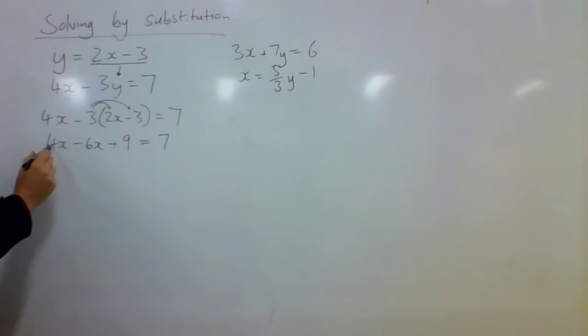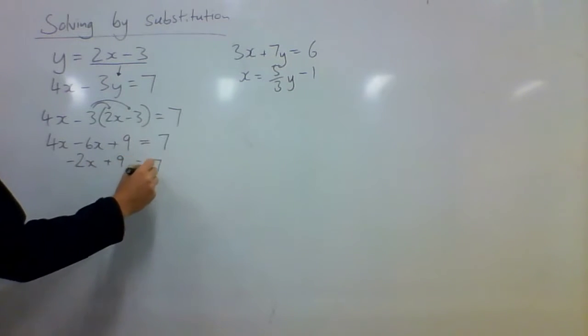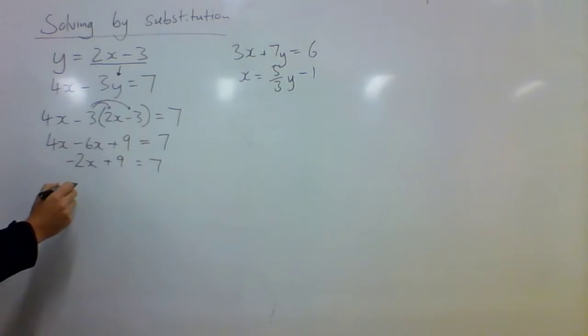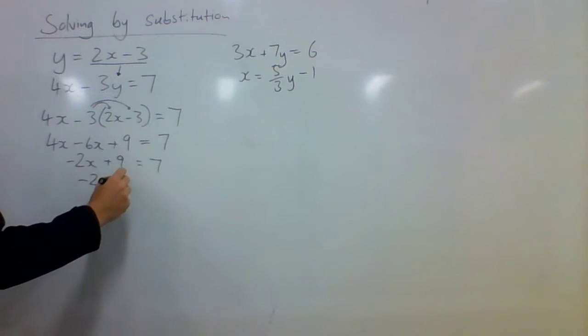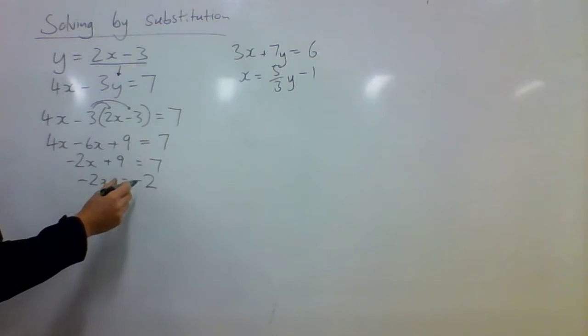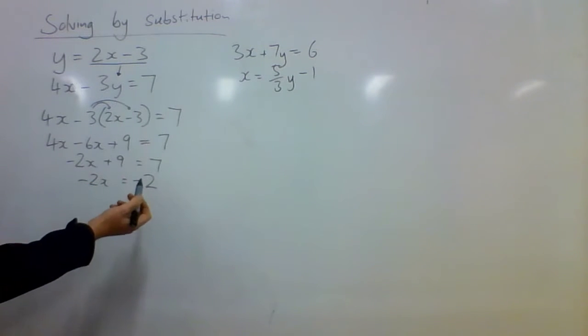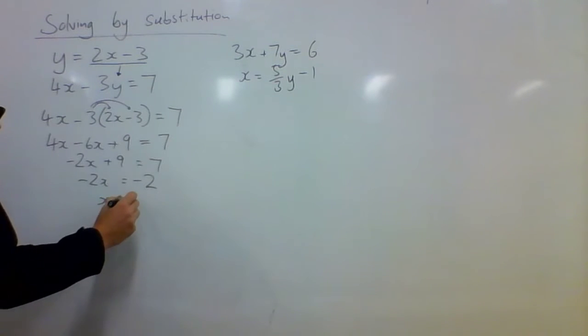Now I'm going to collect the like terms. 4x take 6x is negative 2x plus 9 equals 7. And I'm going to get rid of that 9 there by subtracting it on the other side. So I'll end up with negative 2x equals 7 take 9 which is negative 2. So if negative 2 times x equals negative 2, I can divide both sides here by negative 2. Or I can really just see that if something multiplied by something equals that number, x has got to be 1, right? So x is equal to 1.